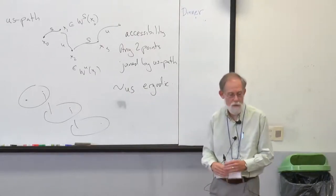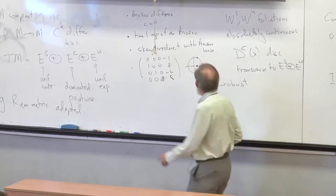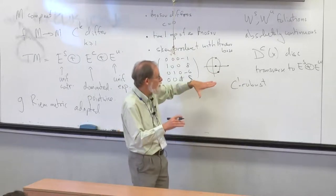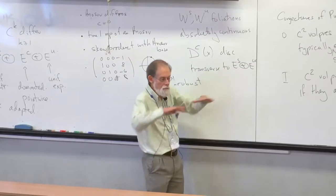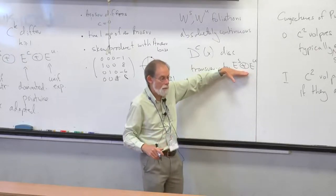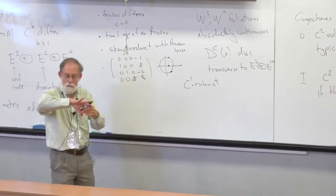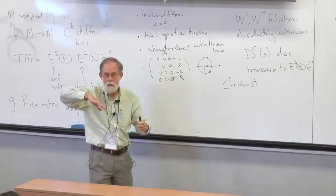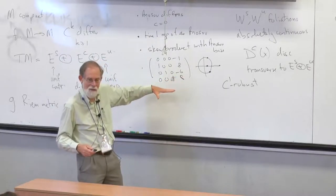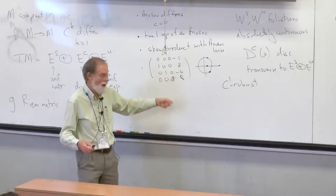Looking at the four-dimensional torus example, the stable and unstable foliations have linear one-dimensional leaves. ES plus EU is a plane. If you go along stable and unstable paths, you're trapped in that plane — there is no way this thing is accessible. But the plane has irrational slope in four dimensions, and because of that it's easy to see that you do have essential accessibility here. So essential accessibility is actually essential if you want to talk about examples like this one.